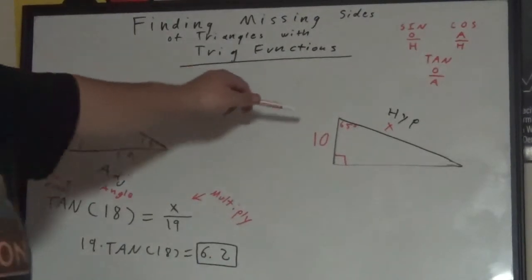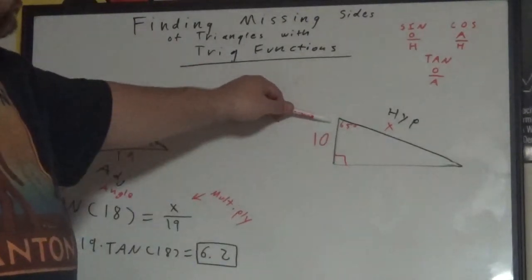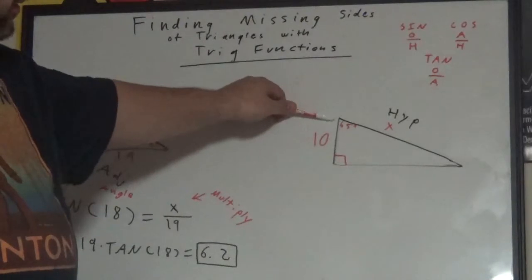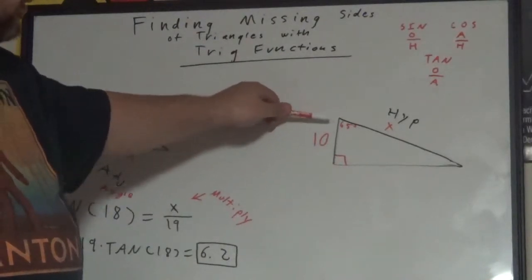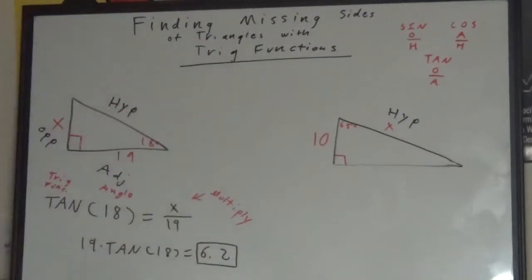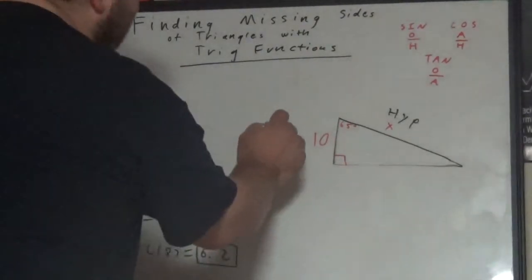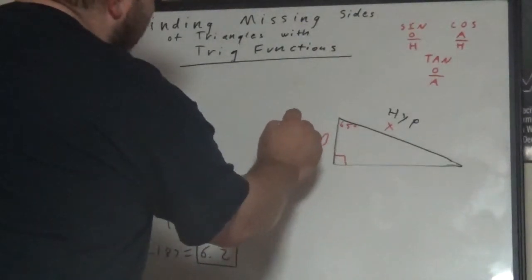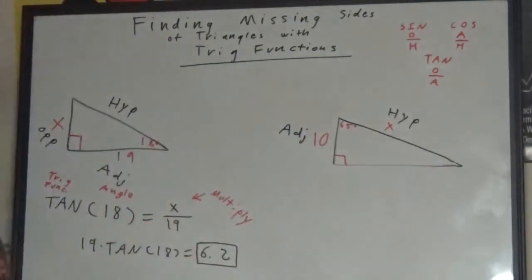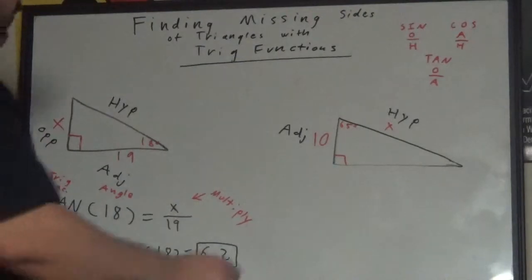Next we are going to find the angle that we are given which is 65 degrees. Now which side is touching that, of course, that is the 10 and that is the adjacent side. And the side that is left over is always our opposite.